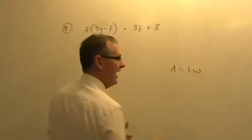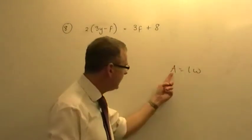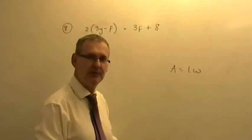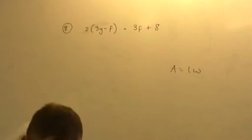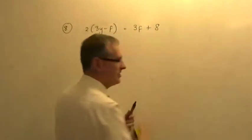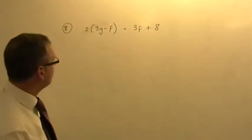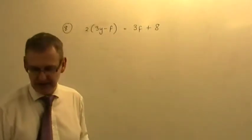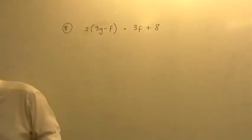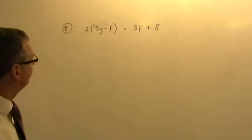For example, A equals LW, the area of a rectangle. A is on its own, it's the subject of the formula. At the moment this does not have a subject as it stands there. It isn't a letter which is on its own. What we are asked to do is change this around so that we get a new subject. And the subject that we're looking for, it says make Y the subject of the formula.